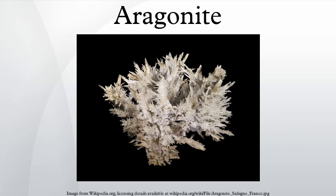In others, aragonite forms only discrete parts of a bimineralic shell. Aragonite also forms in the ocean and in caves as inorganic precipitates called marine cements and speleothems, respectively. The nacreous layer of the aragonite fossil shells of some extinct ammonites forms an iridescent material called ammolite.